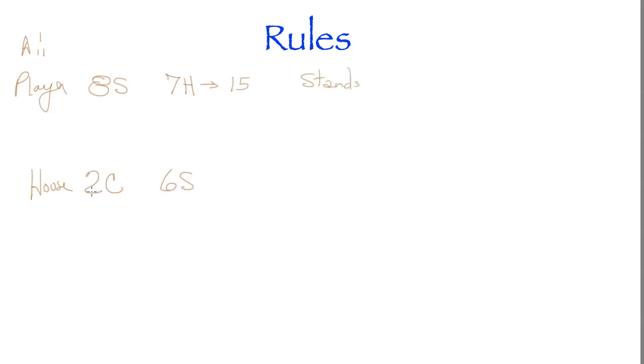Now the player doesn't see the house's cards necessarily here. In fact, they only see one card that the house will have. Now the house has to take cards until they get seventeen or more.